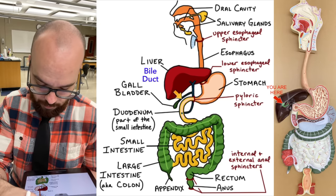The duodenum wraps around and connects into the small intestine, which travels throughout this region. Down here is the cecum, the beginning of the large intestine, where the small intestine connects. Just below is the entrance to the appendix. Then we have the ascending colon, transverse colon, and descending colon. You can see the sigmoid colon making its S-shape, and then feces will travel out through the bottom and out the anus at the end of that tube.